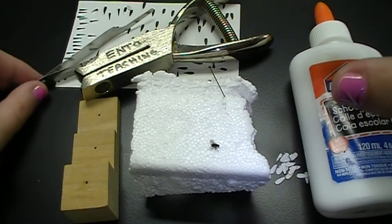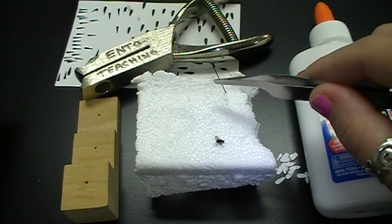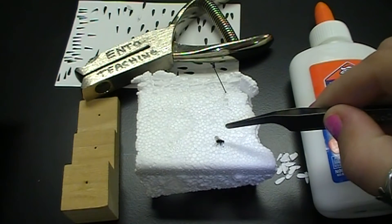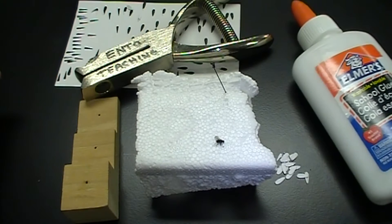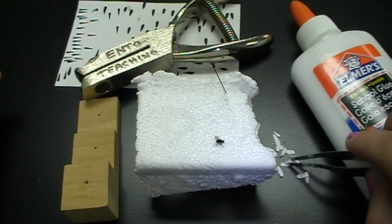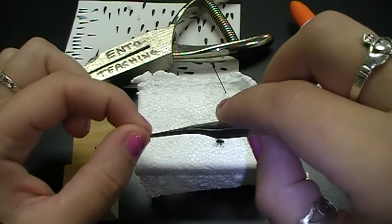You're going to need a few things: styrofoam, tweezers or forceps, insect pins, your insect, and a few little teardrop-shaped pieces of paper called points. This is what you're actually going to be mounting your insect on.